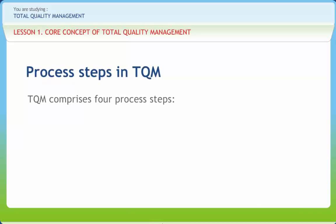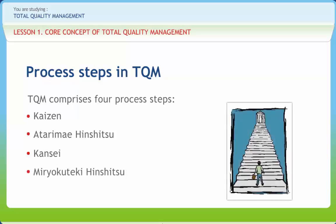TQM comprises four process steps. First is Kaizen, which focuses on continuous process improvement to make processes visible, repeatable, and measurable. Second is Atarimai Hinshitsu — the idea that things will work as they are supposed to. Third is Kansei, which examines the way the user applies the product, leading to improvement in the product itself. Fourth is Miryokuteki Hinshitsu — the idea that things should have an aesthetic quality.